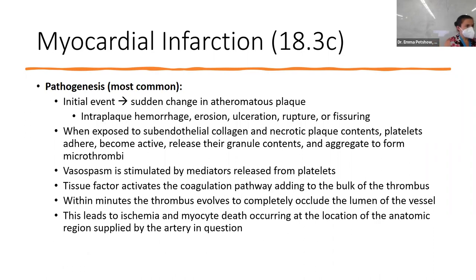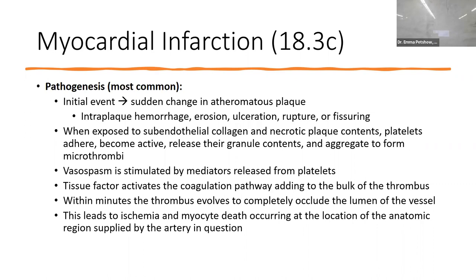This leads to ischemia and myocyte death specifically at the location where blood supply was cut off. This is a great time for anatomy questions — for example, if an occlusion occurred at the left circumflex artery, knowing what area of the heart that cuts off blood supply to would be important. Similarly, knowing what lies below the left anterior descending artery would be relevant.